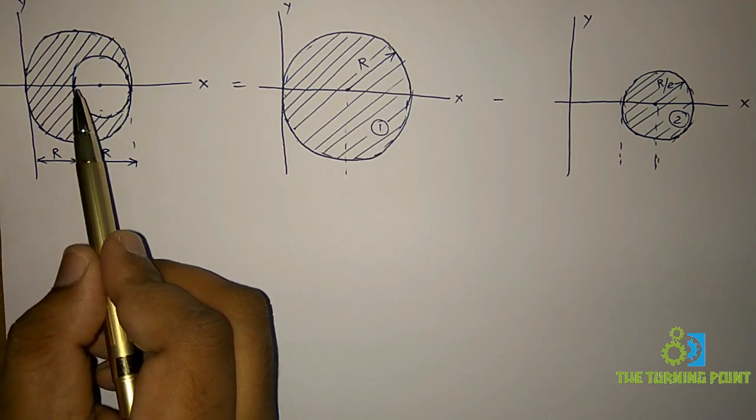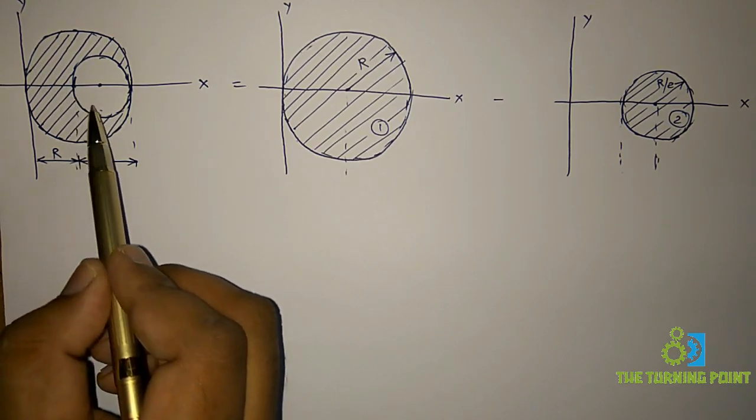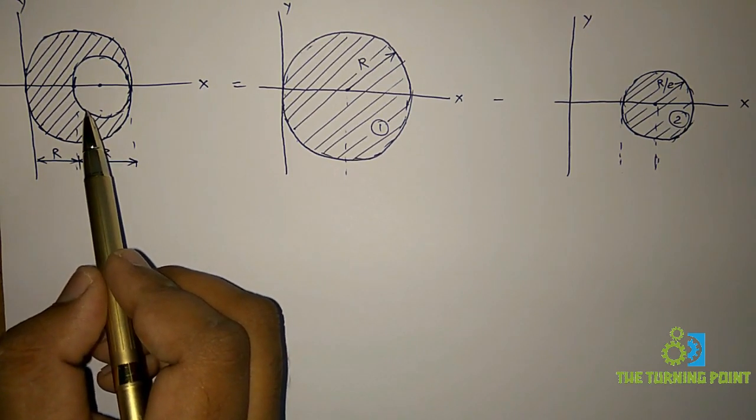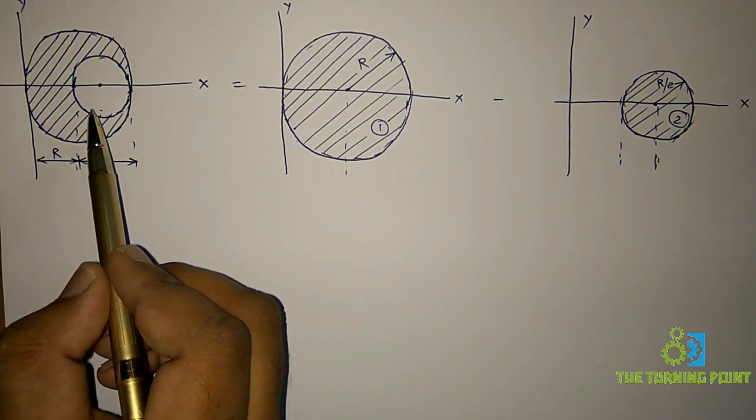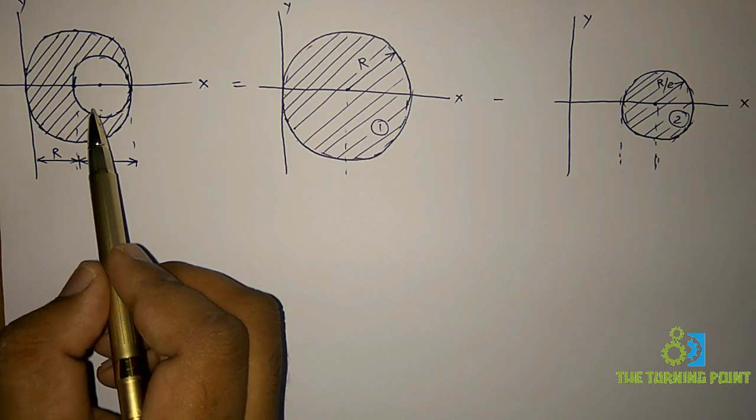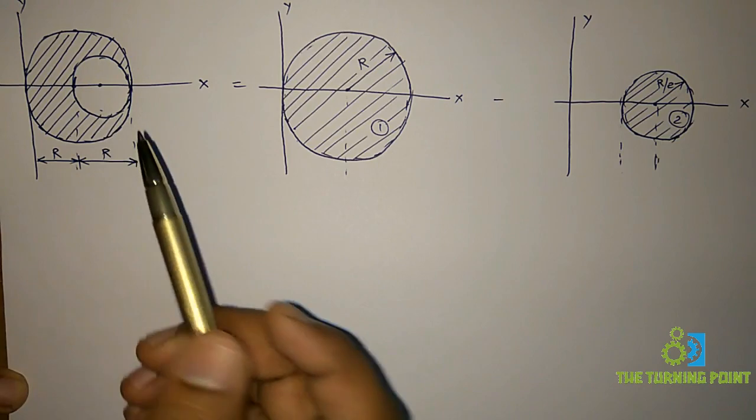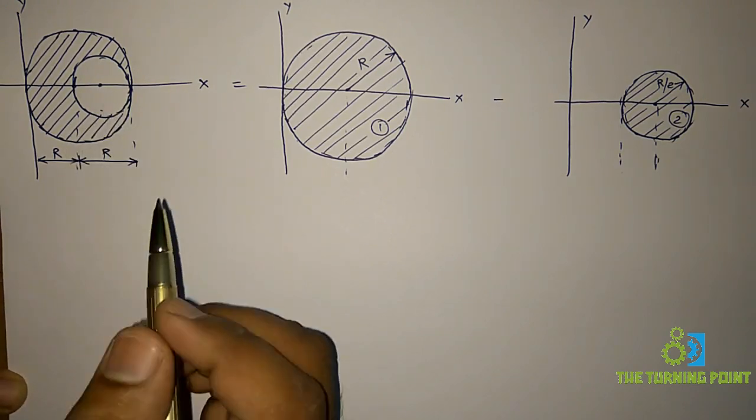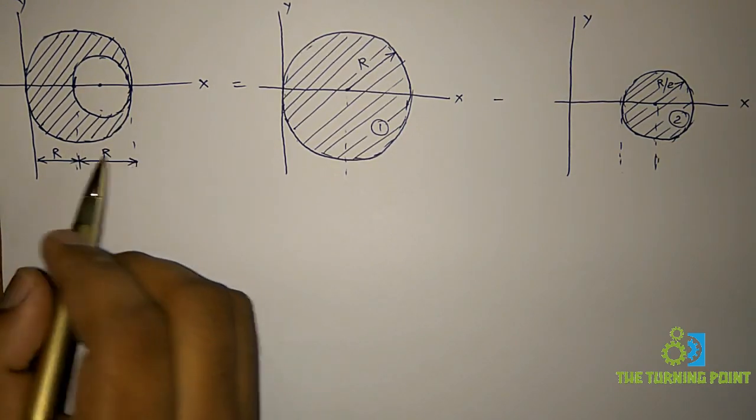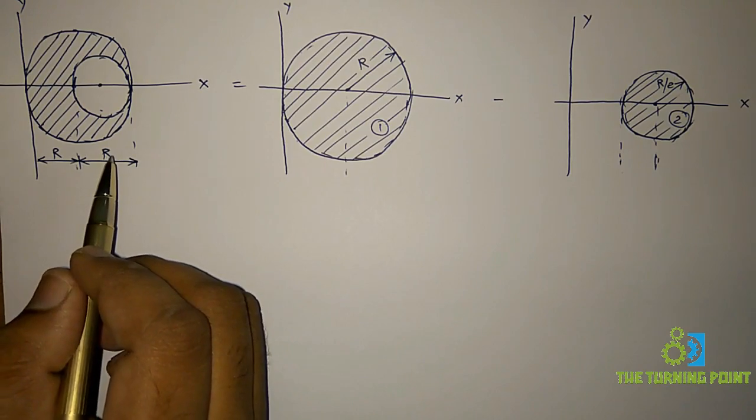So therefore, the centroid coordinate will be lying on x-axis only. So then you can mention that the y-coordinate will be equal to 0. The y-centroid coordinate will be equal to 0. Why? Because on x-axis, y-coordinate is 0. Right? So you can write one statement and mention that one as equal to 0.